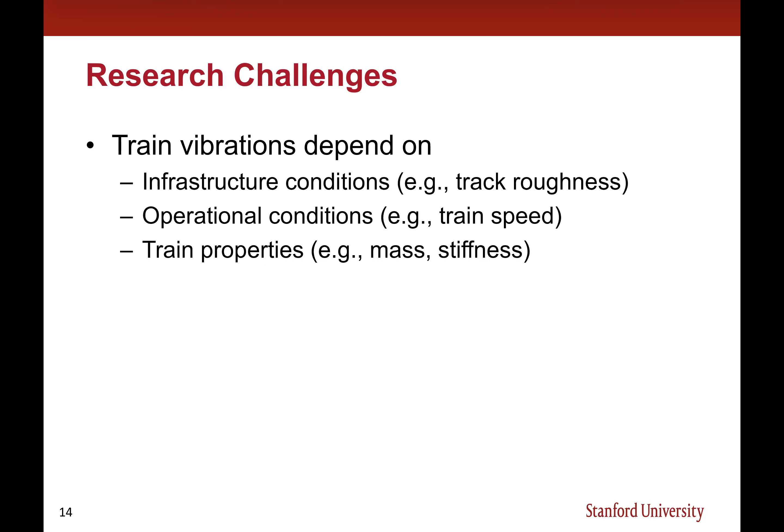The trains are instrumented with vibration sensors, and as they travel across different infrastructure, they continuously collect vehicle vibration responses induced by interaction with the surrounding environment. From these responses, we apply a classification system, and when any anomaly or potential damage is detected, information is sent to the transportation authority to send people to further inspect the suspected area. However, there's never free lunch — the train vibration responses depend on many different excitation sources, including infrastructure conditions like track roughness or damage, as well as operational conditions like train speed.